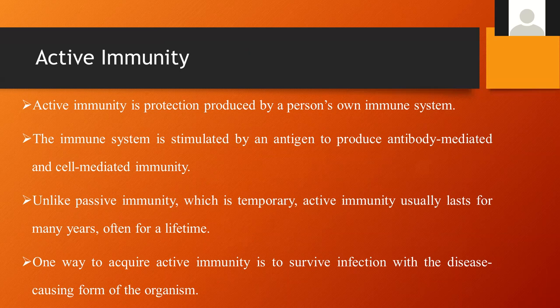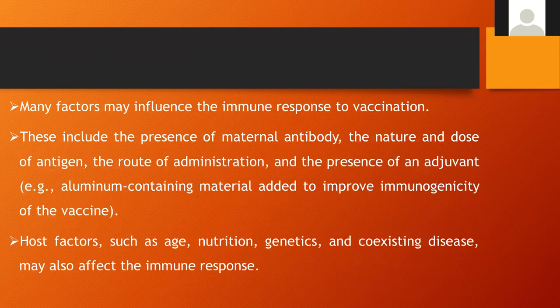The person will produce either antibody-related or cell-mediated immunity depending on the nature of the pathogen. Passive immunity is very temporary — the antibody stays for a short period — but active immunity usually lasts for many years or in some cases for a lifetime. One way to acquire active immunity is to survive infection with the disease-causing form of the organism. Another way is through immunization or vaccination, which is itself a form of active immunity.